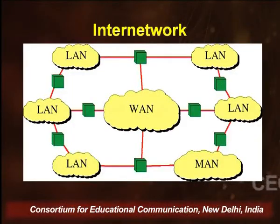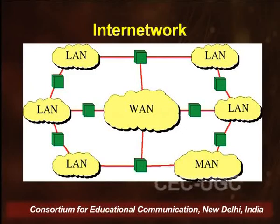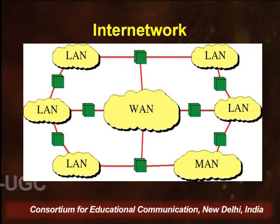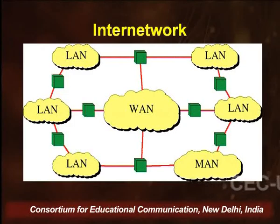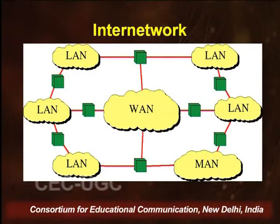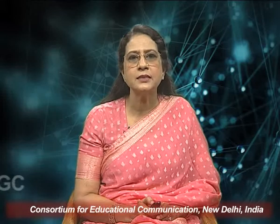A computer network is a collection of autonomous computers interconnected by a single technology. Computers are said to be connected if they can exchange information. Networks come in various forms, sizes, and shapes — LANs, WANs, and MANs. Each network is made up of hardware, which carries raw data bits across the transmission medium, and software, which consists of instruction sets that provide the services expected from a network.